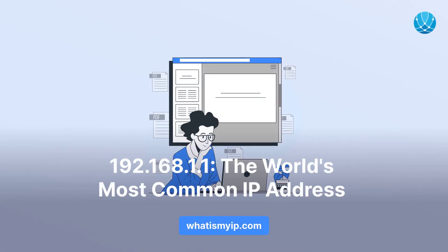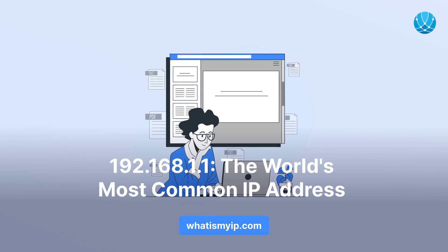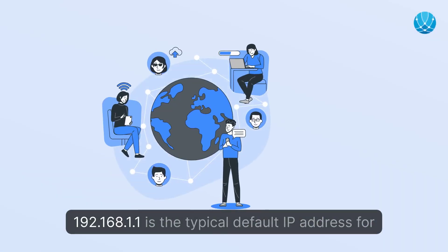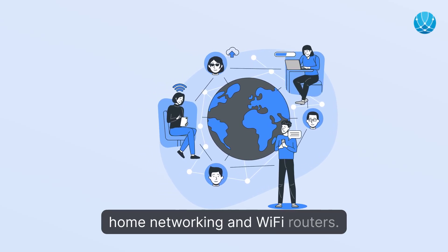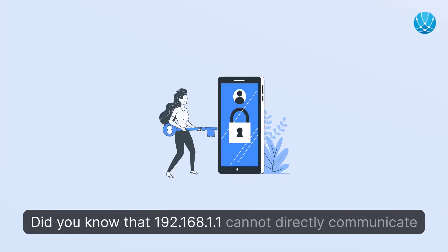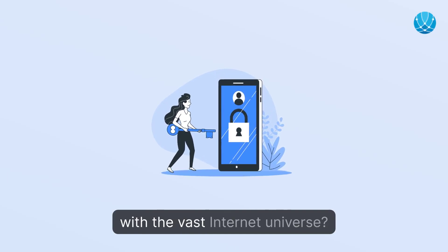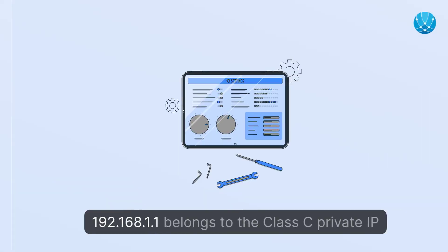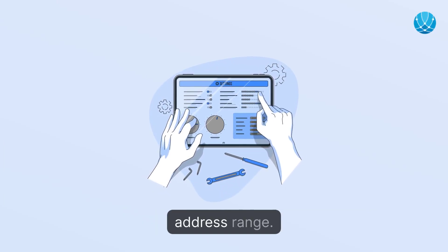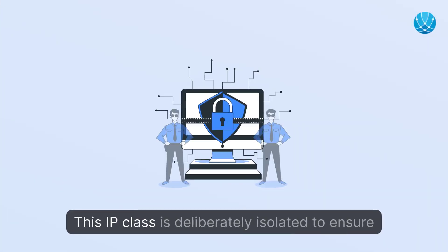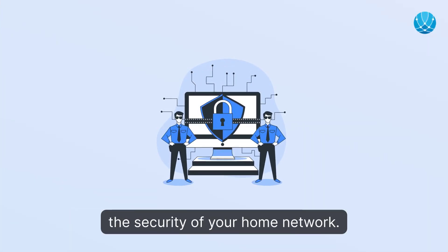192.168.1.1 is the world's most common IP address and the typical default IP address for home networking and Wi-Fi routers. 192.168.1.1 cannot directly communicate with the vast internet — it belongs to the Class C private IP address range, which is deliberately isolated to ensure the security of your home network.